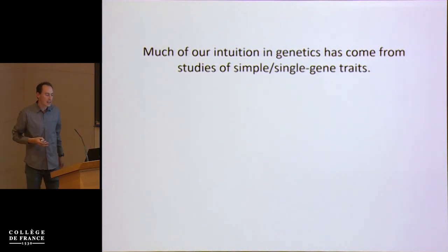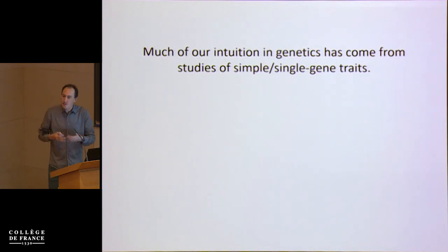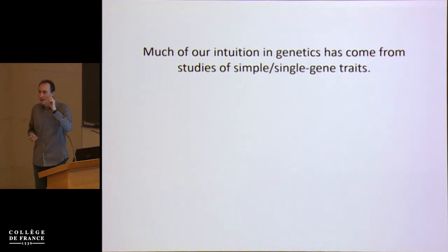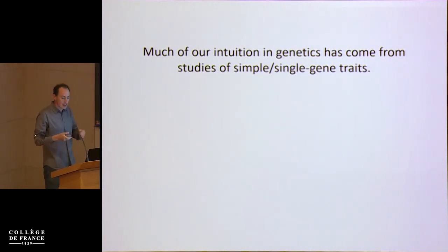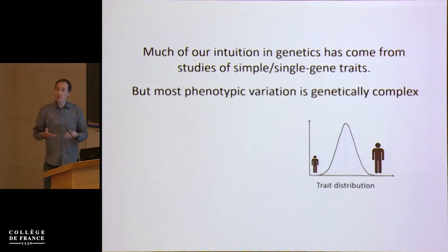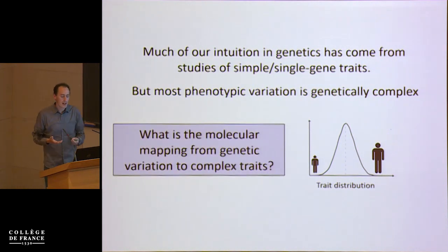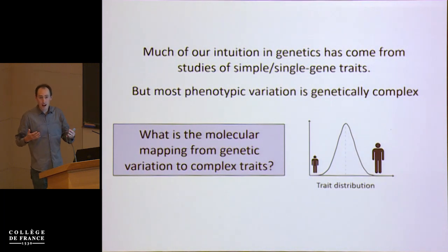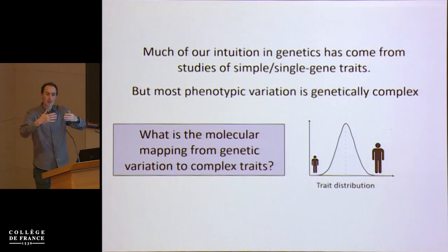Most of our intuition in genetics has come from thinking about simple, single-gene traits. Much of the progress in the 20th century in genetics came from identifying mutations that cause an organismal trait and then doing molecular biology work to understand the links from the genetic variant to how those changed a phenotype. But most phenotypic variation is genetically complex — if you think of height, there's an enormous number of variants across the genome that affect human height.